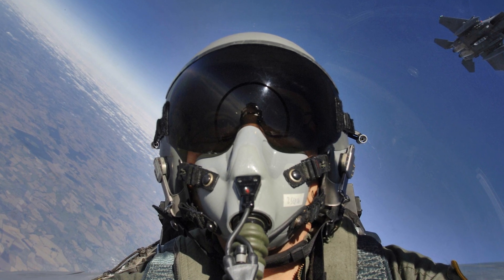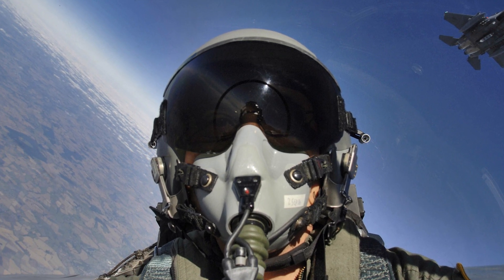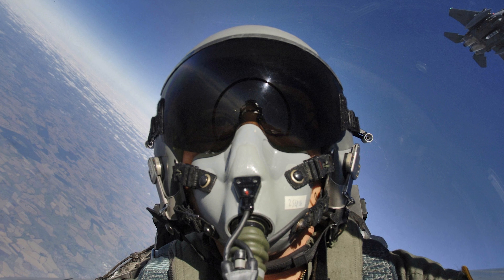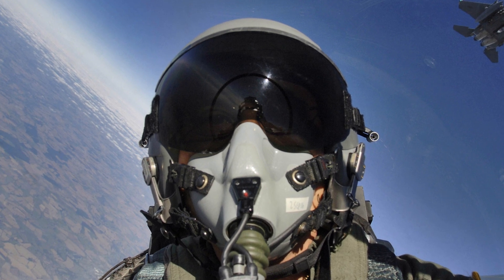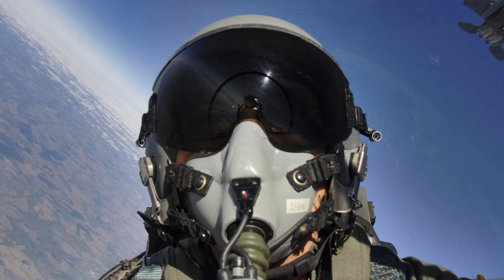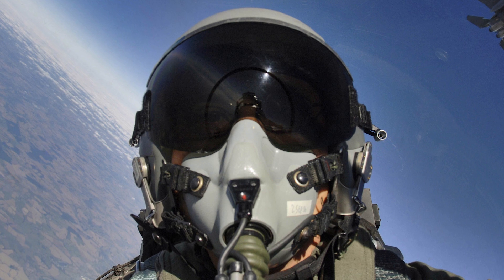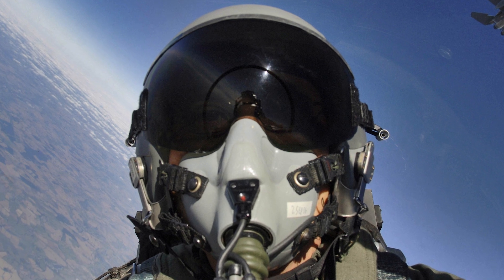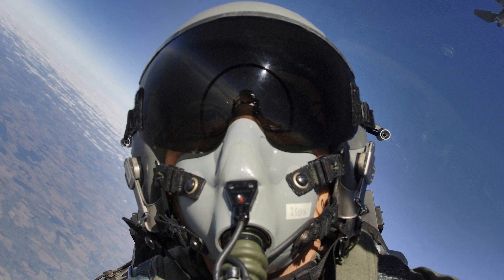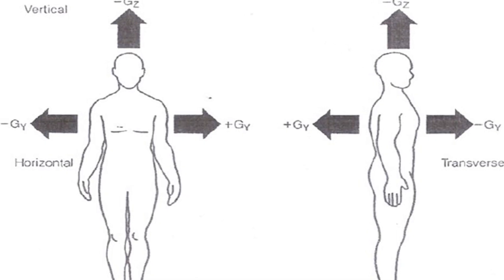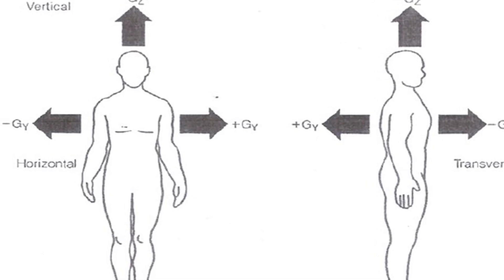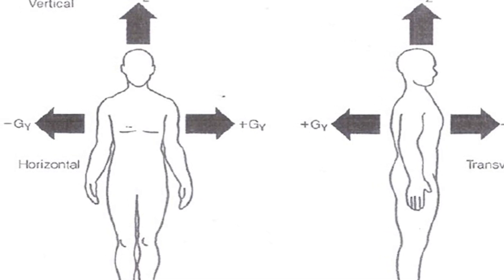A person who weighs 150 pounds at one G will actually weigh 450 pounds at three Gs — no kidding. G forces act on the human body in different axes, or directions. These are usually described as the X, Y, Z axes, each having a positive or negative direction.